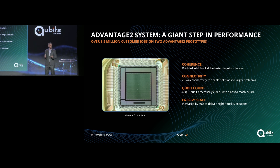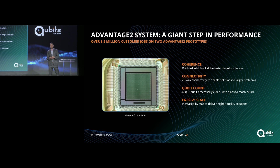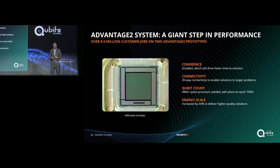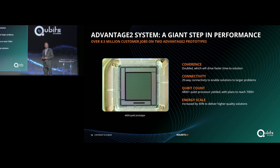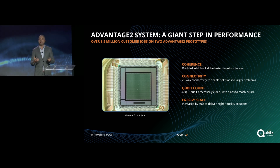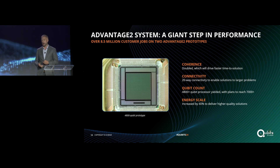The 20-way connectivity really enables larger, more complicated problems to be solved on the QPU. Qubit count and scale matter — the bigger a problem you can solve, the more valuable it is for customers. We're currently yielding and calibrating our 4,800-qubit samples with plans to reach beyond 7,000 with the Advantage 2 program. Finally, energy scale represents the strength and precision with which you can bind interactions between qubits — the higher the energy scale, the higher the quality of the solutions you get.